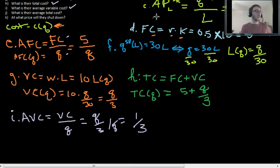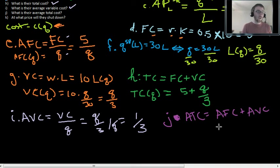Okay. Average total cost, average total cost then. Here we go. J, part J, average total cost. That's going to be our average fixed cost plus our average variable costs. Average fixed cost now, we have 5 over Q. And then our average variable costs are going to be one third. And so that is our average total cost. 5 over Q plus one third.